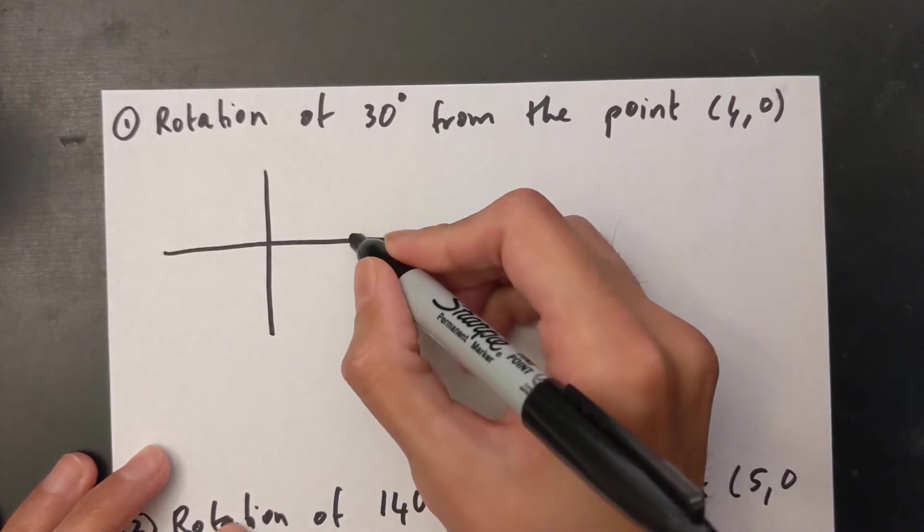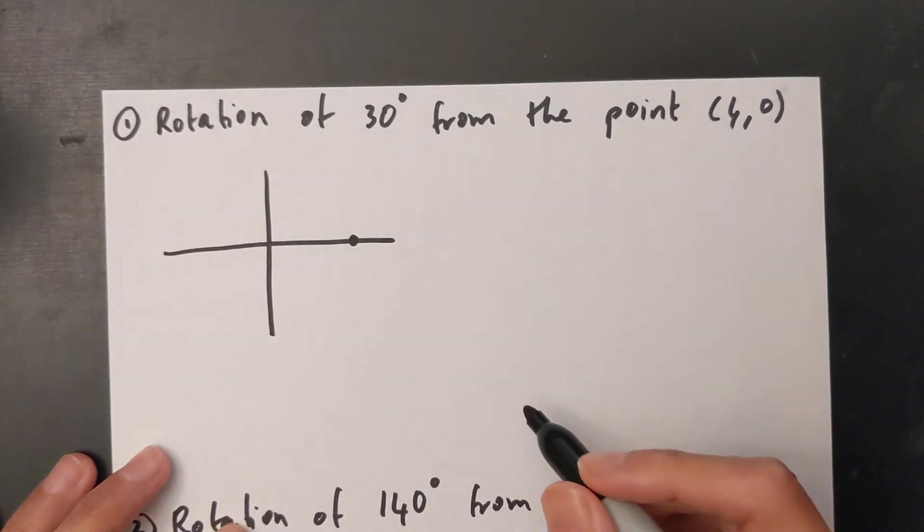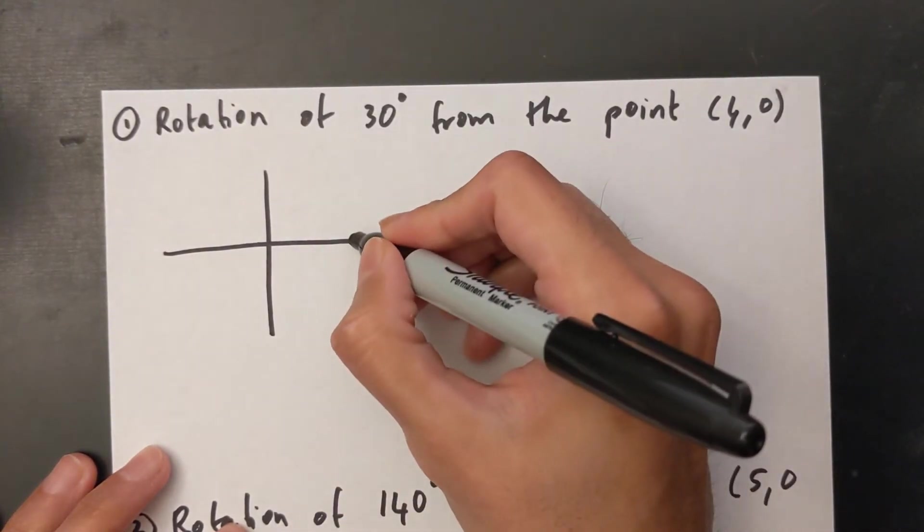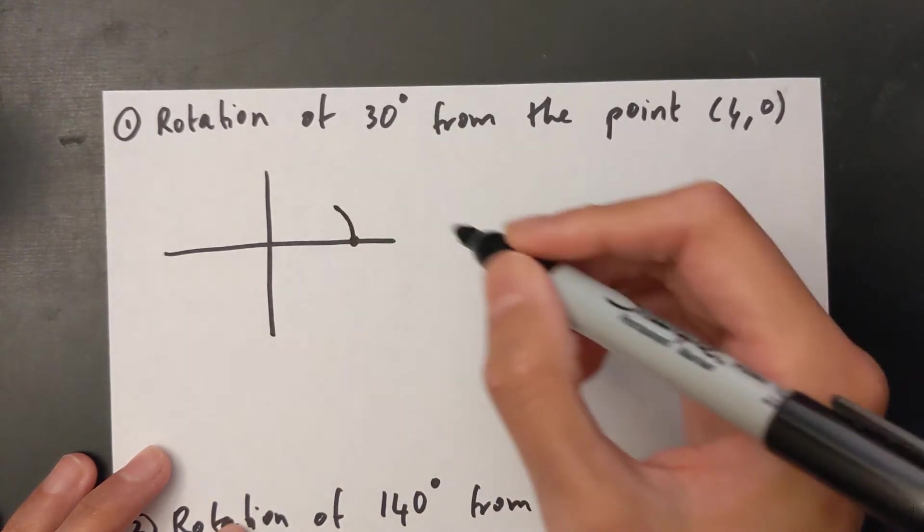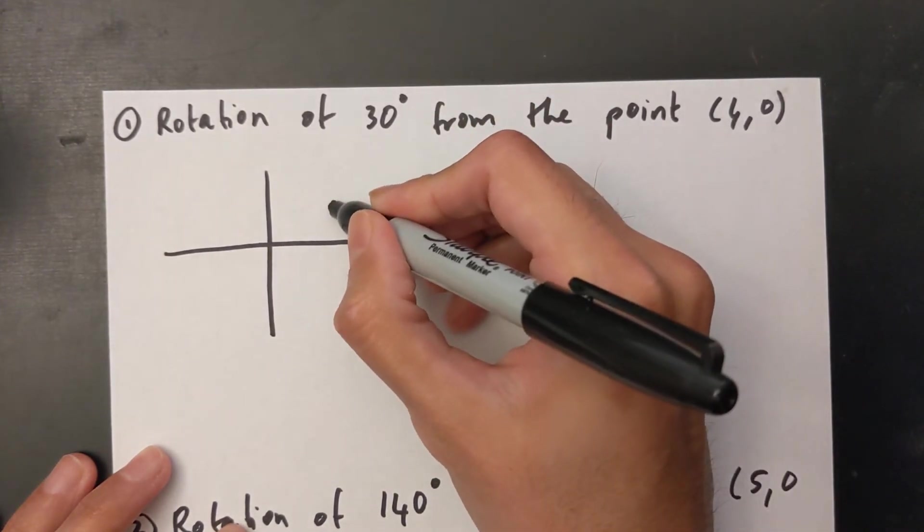So it's somewhere over here and I'm rotating this about the origin, so it's rotating like this and the point is going to end up over here.